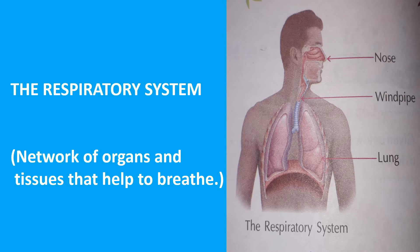What is the respiratory system? The respiratory system is the network of organs and tissues that help you breathe. It includes your airways, lungs, and blood vessels. The muscles that power your lungs are also part of the respiratory system.